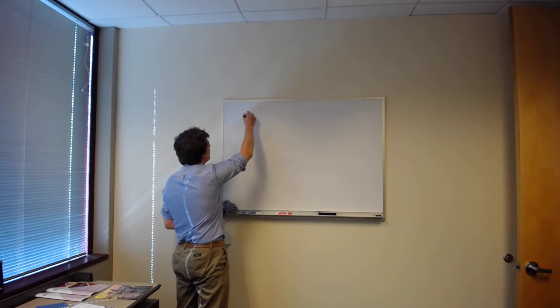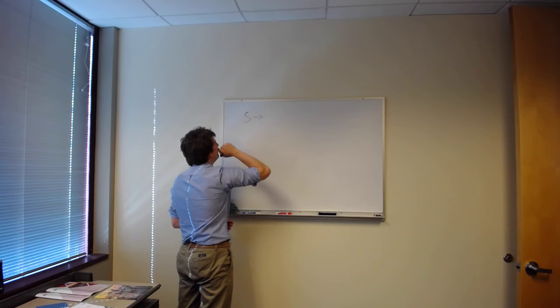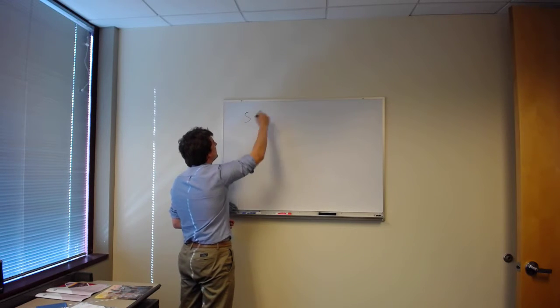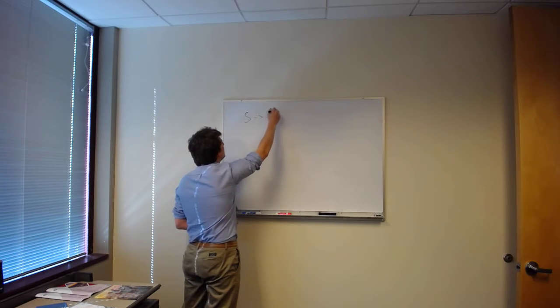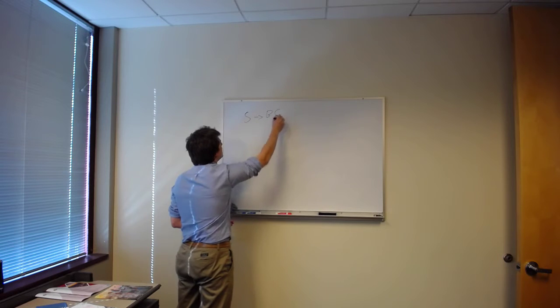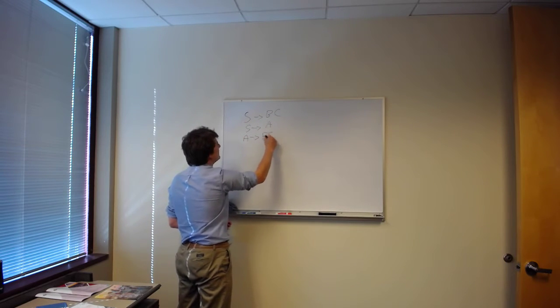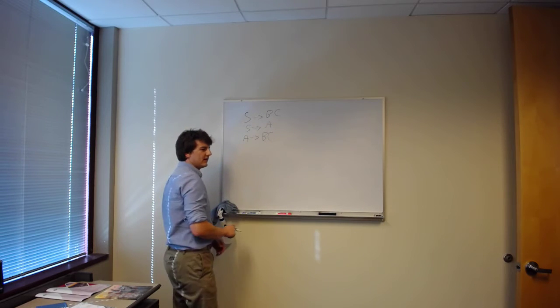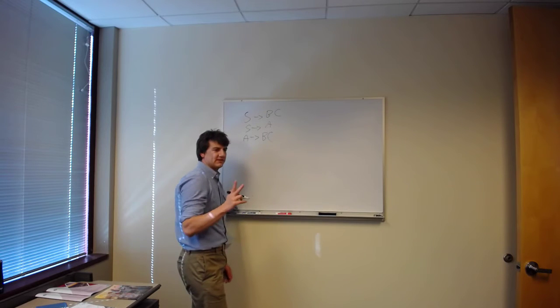So let's think about it in a couple ways. You can think about a super easy example. I'm gonna make this... And then I have s goes to a, a goes to bc, so like that. So there's two ways to think about it.